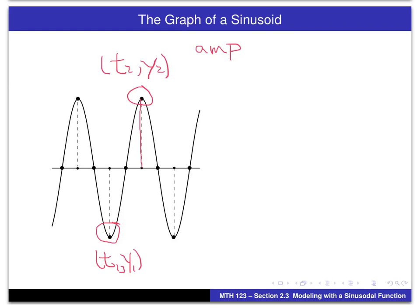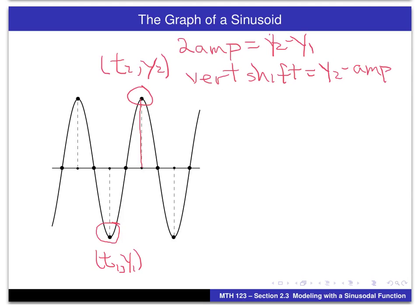The amplitude is kind of half of the difference between the high point and the low point. So we can say two times the amplitude equals Y2 minus Y1, and we can use that to determine the amplitude, or the value for A in our equation. The other thing we can do is use that information to get the vertical shift for our sinusoid. That's basically going to be the high point Y2 minus the amplitude. Another way is to use (Y1 plus Y2) divided by 2, and that will give you the same value.